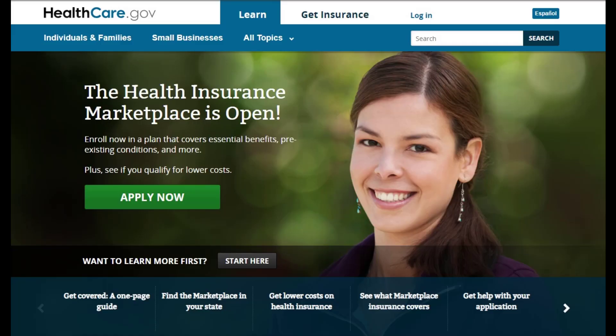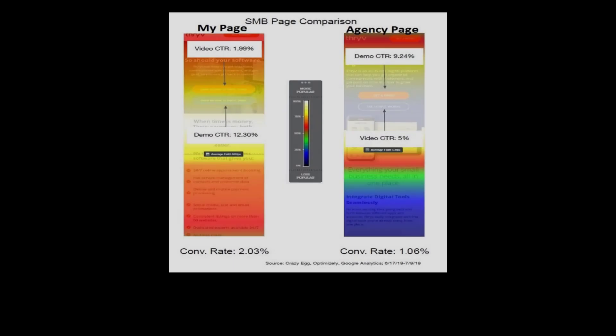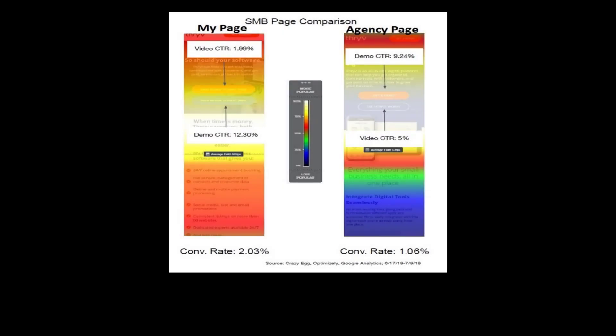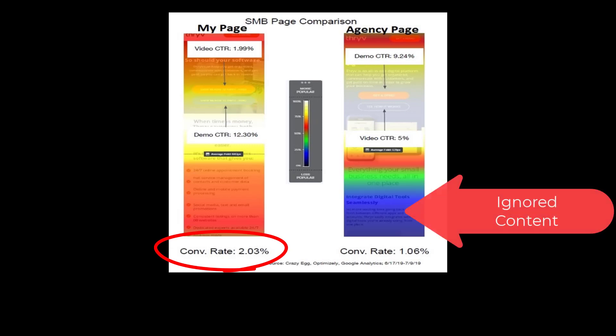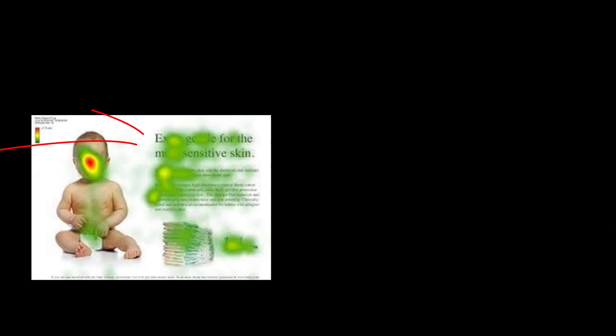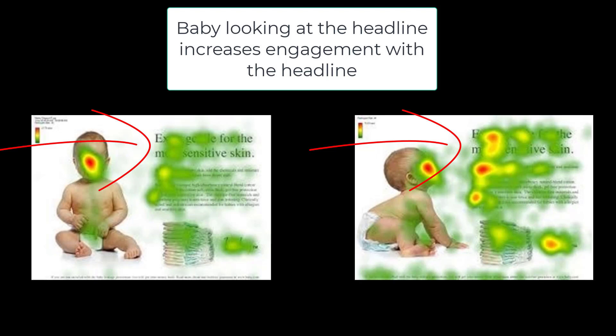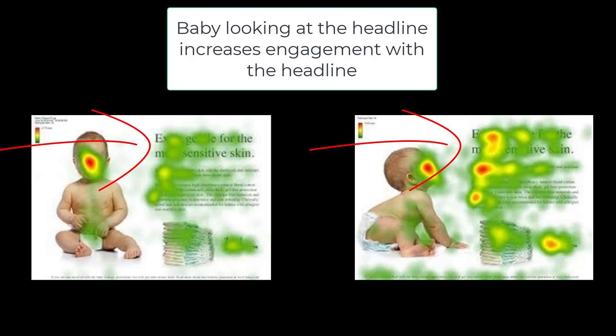Even the images you use will either help you grow your online customer base or repel them. We can easily see this with heat maps and how people look at your marketing material. Images can lead people to read more of your content or ignore it and bounce from your page. Common wisdom is to have a smiling woman looking at your potential customer — basically looking back at them on the page — but in testing, this pulls eyes away from the marketing message and lowers the conversion rate, eating into your three seconds.